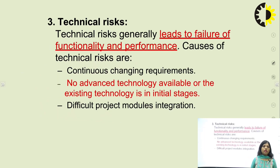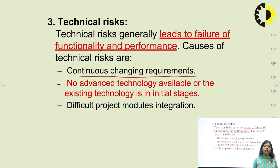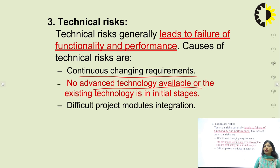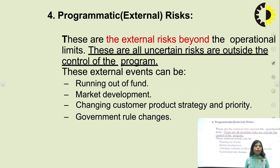Technical risk generally leads to a failure of functionality and performance since it happens at the technical level. Reasons for technical risk include continuously changing requirements — where customer requirements keep changing — no advanced technology available or existing technology being in initial stages, and difficult project module integration. External risk refers to risks beyond the operational limits — uncertain risks that are outside the control of the program.